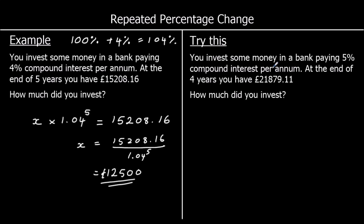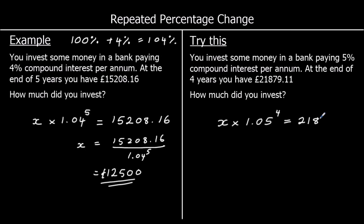This time, you invest some money in a bank paying 5% compound interest for 4 years. So your original amount of money times 1.05 — that's our multiplier to add on 5% — and we want to do it for 4 years, so we multiply by 1.05 four times. So our original amount of money times 1.05 to the power of 4 equals £21,879.11.